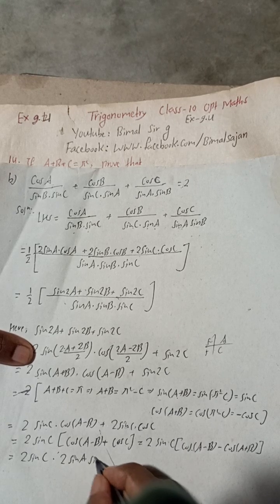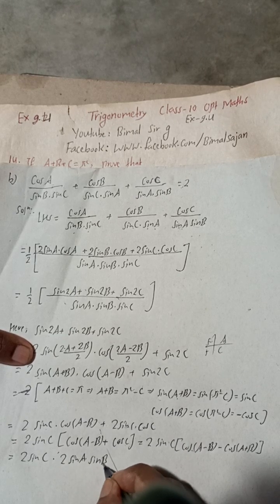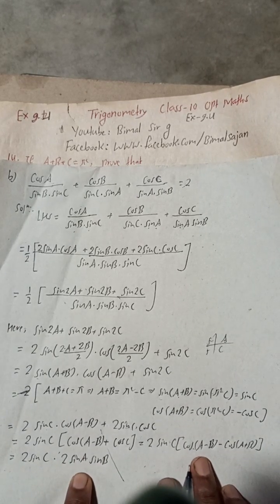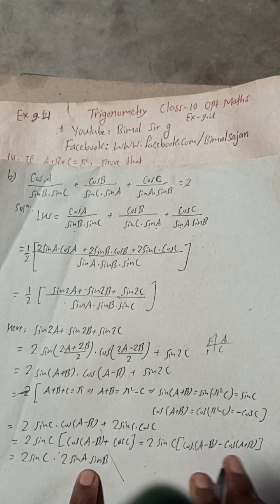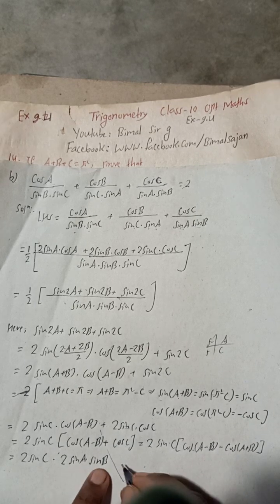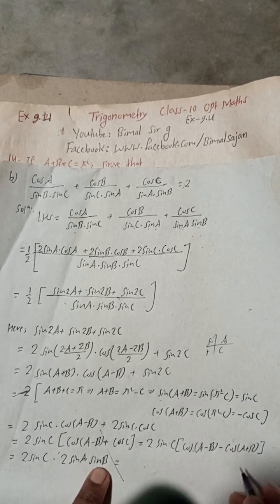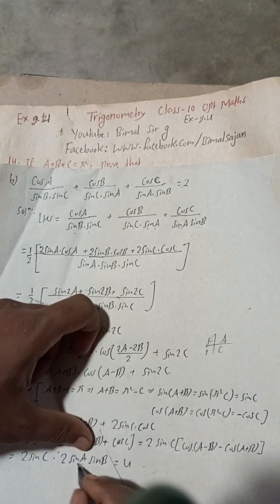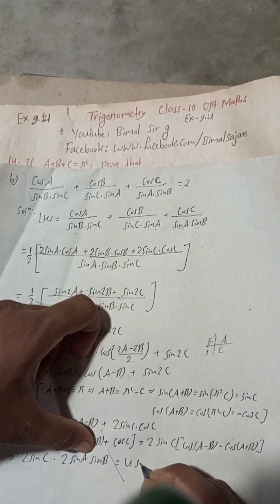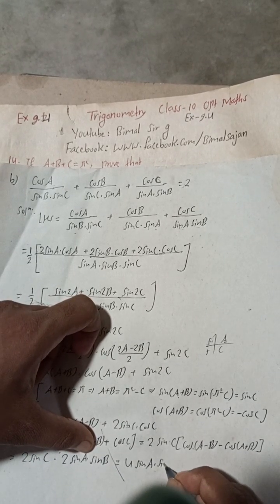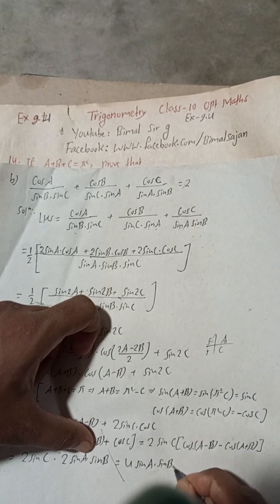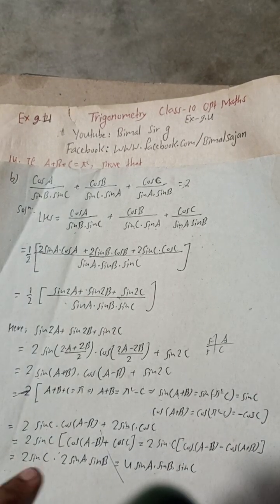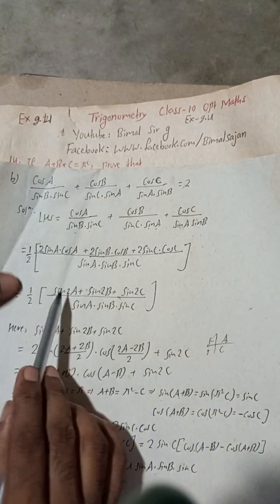So 2 sin A · sin B is the result: cos(A−B) − cos(A+B) = 2 sin A · sin B. Therefore the numerator becomes 2 sin C · 2 sin A · sin B = 4 sin A · sin B · sin C.